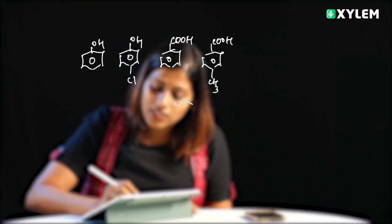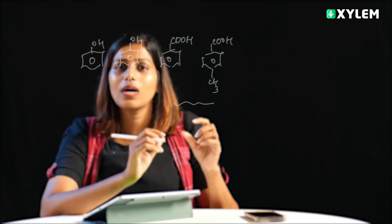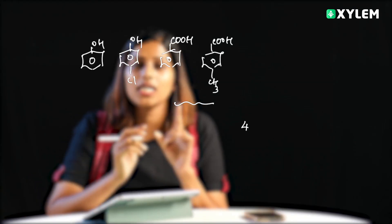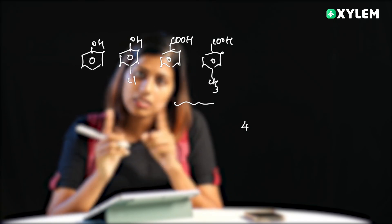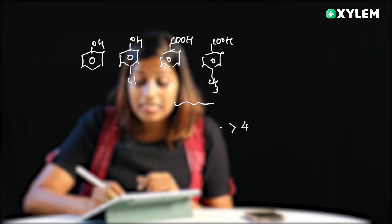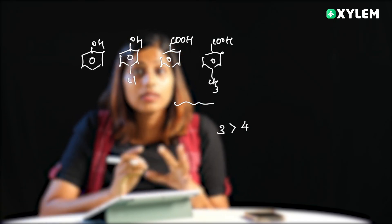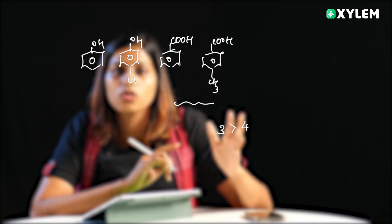Carboxylic acids are always more acidic than the phenolic system. So carboxylic acids are compounds 3 and 4 — they are the most acidic. For that, electron withdrawing groups give better acidity, but there are no electron withdrawing groups here. CH3 is an electron donating group. Since it is an electron donating group, plain benzoic acid (3) is more acidic, followed by 4.